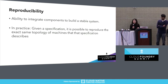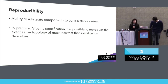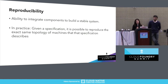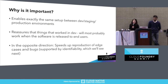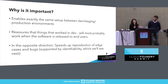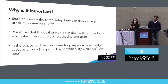A common implementation offered by frameworks addressing reproducibility is to offer a specification that can be versioned as code. Given that specification, it becomes possible to reproduce the exact same topology of machines the specification describes. Reproducibility is important because it enables the same setup between various environments — dev, staging, production — so something that worked for you as a developer will most probably work in production as well.